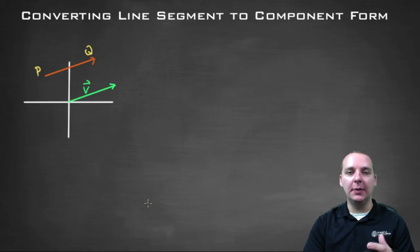If you want to express a line segment as a vector that's written in component form, basically what you're trying to do is move your line segment to where its initial point starts specifically at the origin.